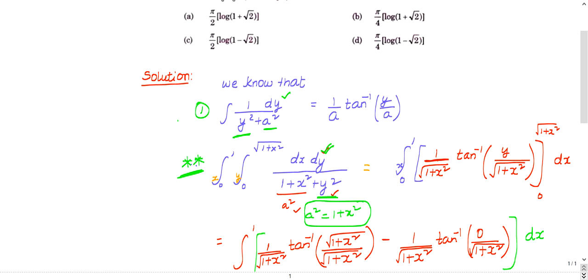Okay, this is the comparison. So what you will get: the one integral will remain as it is, the other integral I am replacing. So you are doing integration with respect to dy. What you are getting is 1 by a. a is nothing but - a square is 1 plus x square - so what is a? Under root 1 plus x square. So 1 by under root 1 plus x square tan inverse y by a. a is again under root 1 plus x square.